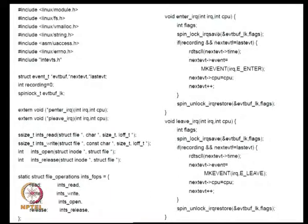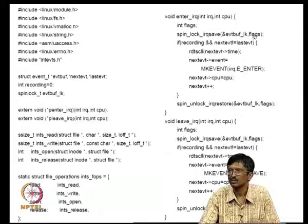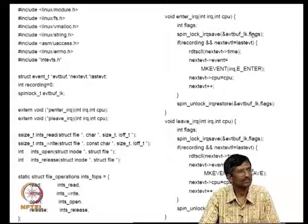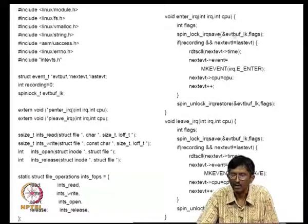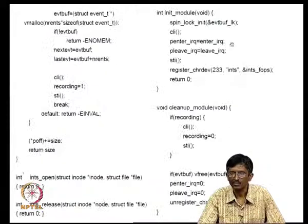In addition, interrupt handlers are not supposed to sleep — we will come to that reason later. The spin lock ensures that you save the state of the interrupts, because there could be multiple interrupts — some on, some off. That state is saved through flags, and the lock being taken was initialized when the module was loaded.